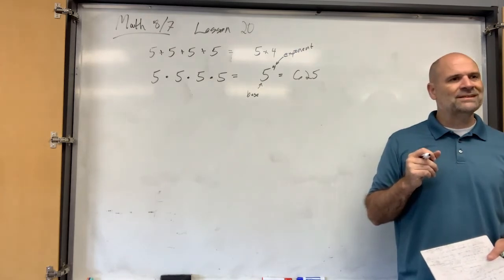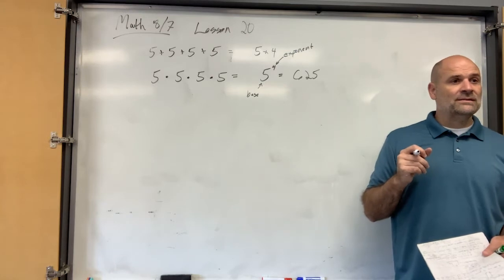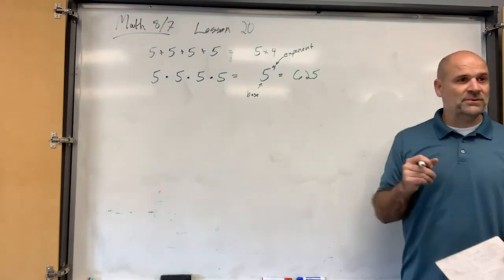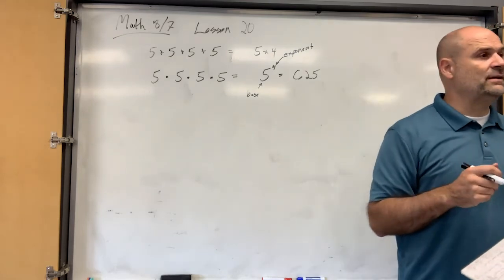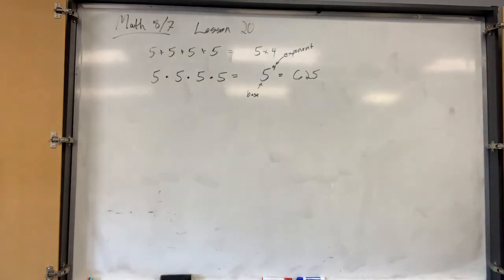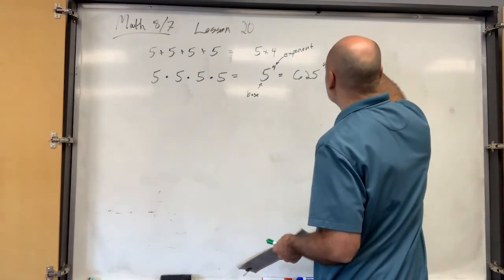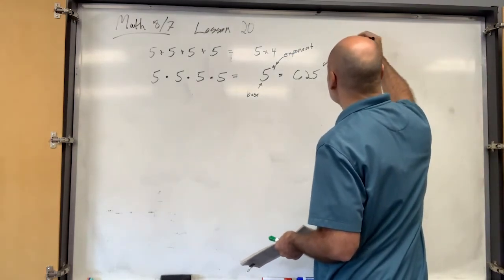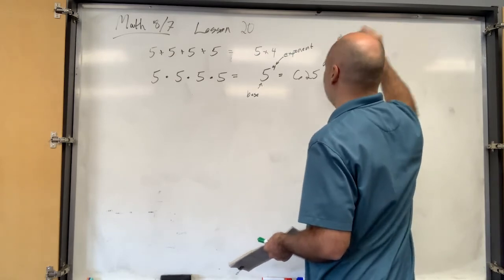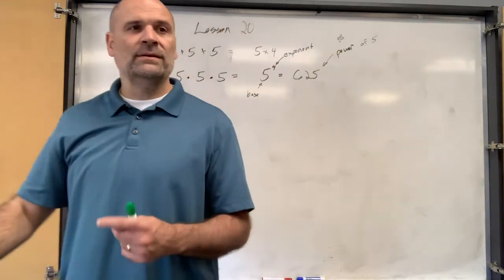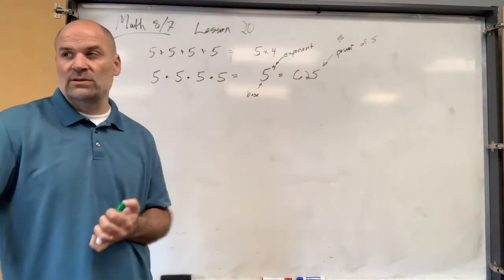Do you know what the answer to an exponential problem is called? I know what it's not called — a reciprocal. It's not called a reciprocal, or Larry. It's not called Larry. It is a number. This is called a power. More specifically, the 4th power of 5. The 4th power of 5 is 625.